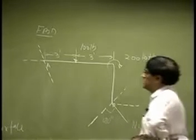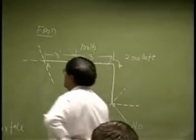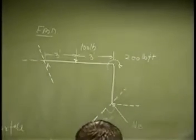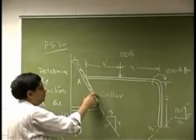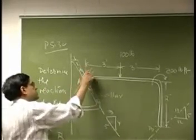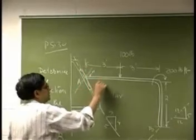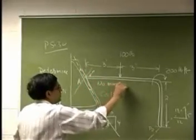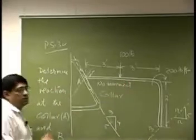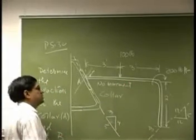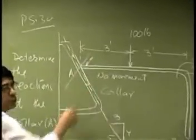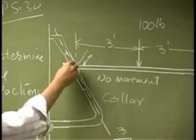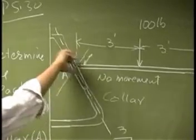Then we look at point A. What happens here is, if you look at the collar, this thing is free to slide along this direction. But if you look at the perpendicular direction, in this direction, there is no movement. So there should be a reaction force perpendicular to this line — that's one reaction. Then, at this point, this thing cannot rotate.